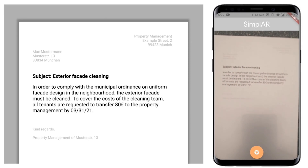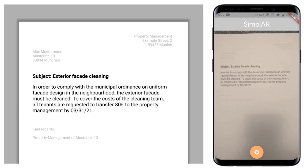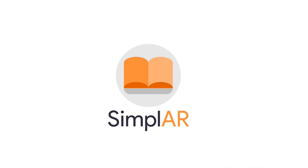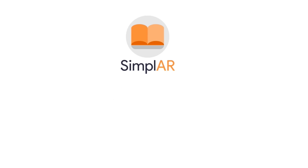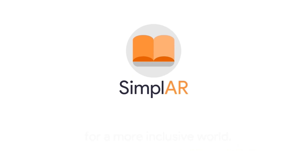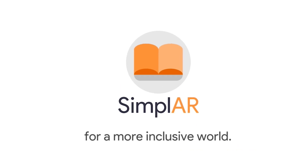The simplified text is returned to the client, which then shows it as an AR overlay. Some texts are so complicated that an AR overlay would be unreadable. In this case, we open a new screen with the plain language text and supporting images, as recommended by the plain language framework. Using SimpleAR, functionally illiterate people can understand any text in any medium independently, and we can have a more inclusive world.